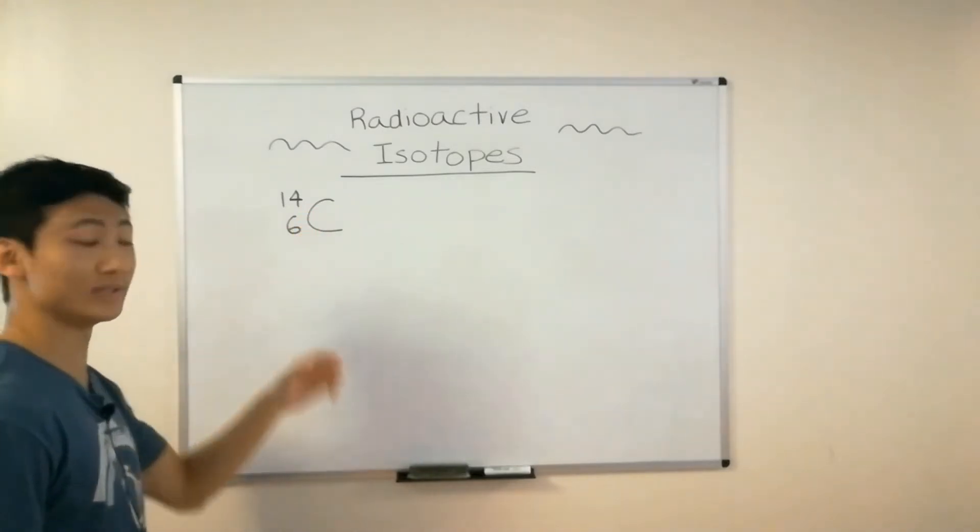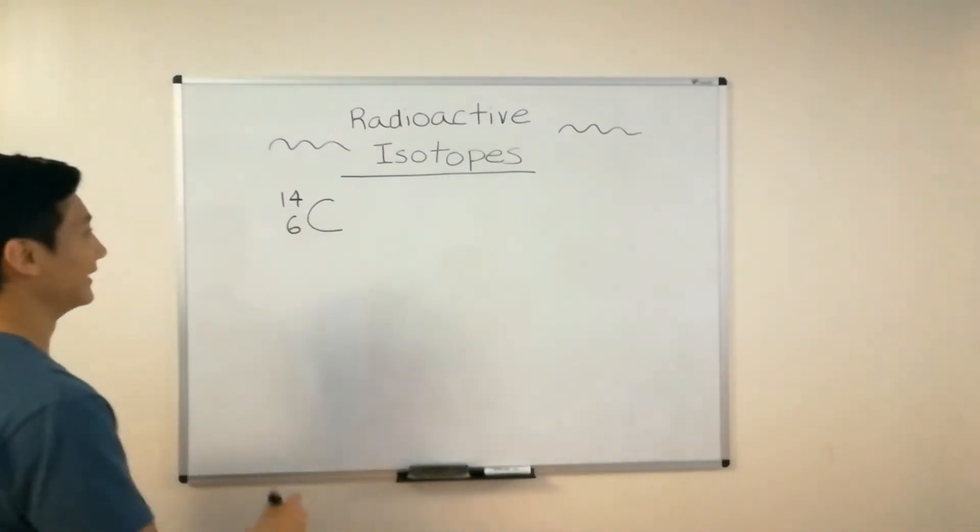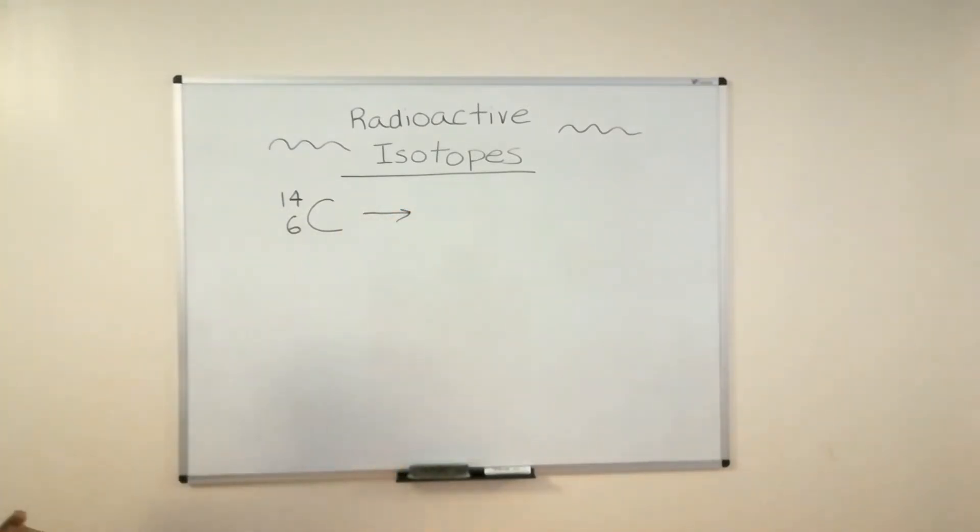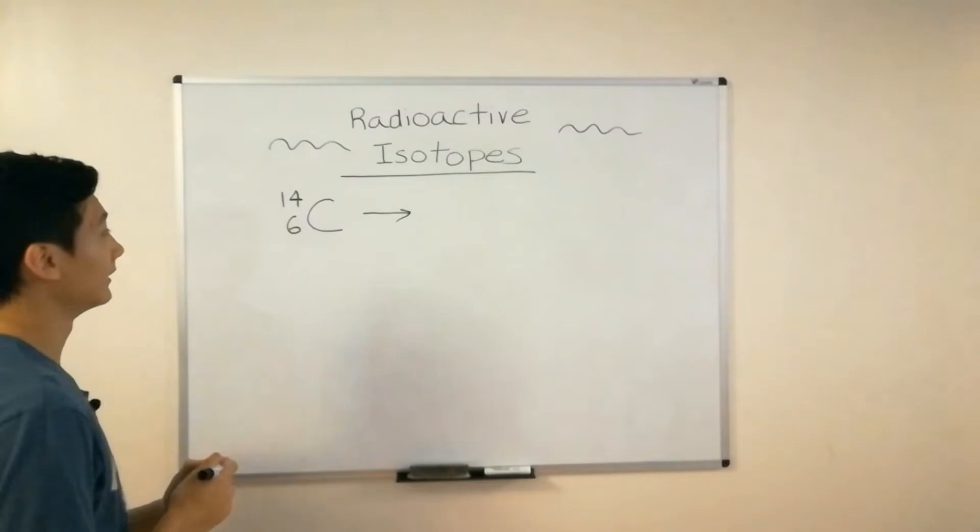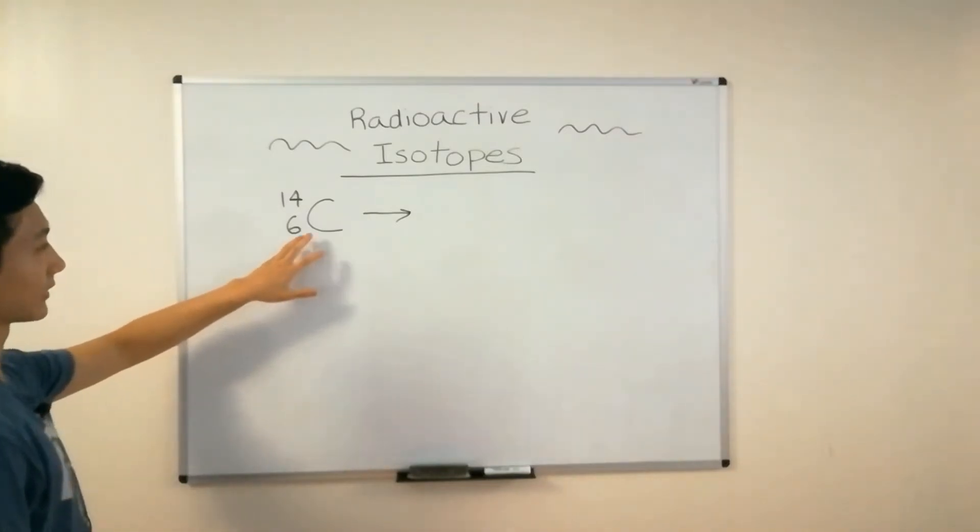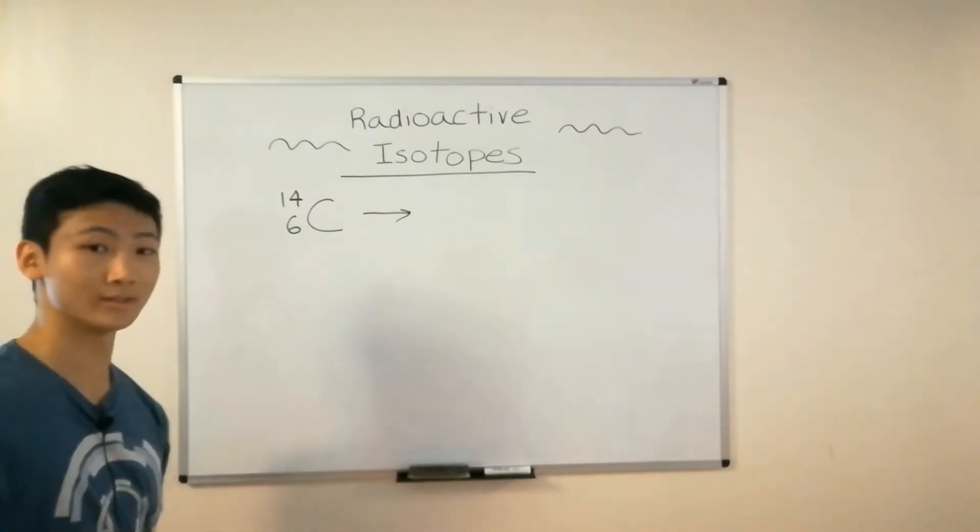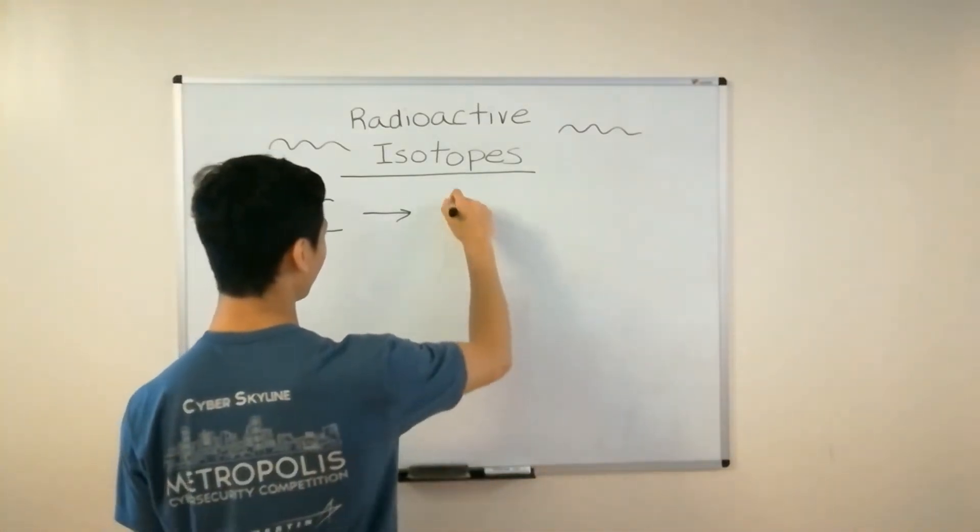Carbon-14 is radioactive. When it's radioactive, it has to decay in some way. It has to emit some sort of particle. Scientists have discovered that carbon-14 decays through something called beta minus decay. You guys don't worry about that.